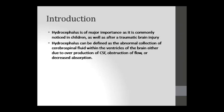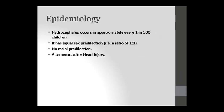CSF abnormally accumulates due to three reasons: either overproduction of CSF, obstruction in its flow, or decreased absorption of CSF. If CSF production increases, absorption decreases, or there is obstruction in its flow — due to these three causes, CSF abnormally accumulates in the brain's ventricles, and that condition is called hydrocephalus.